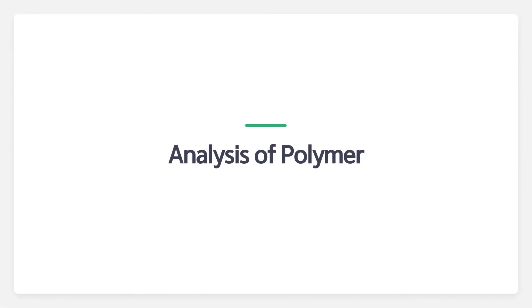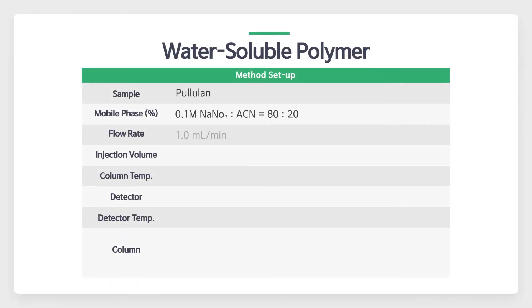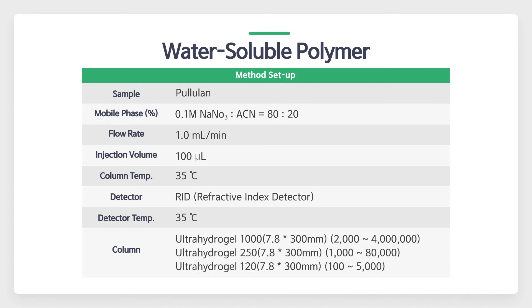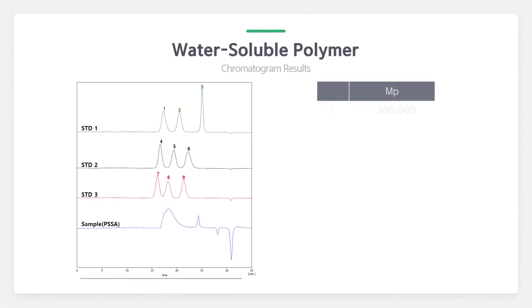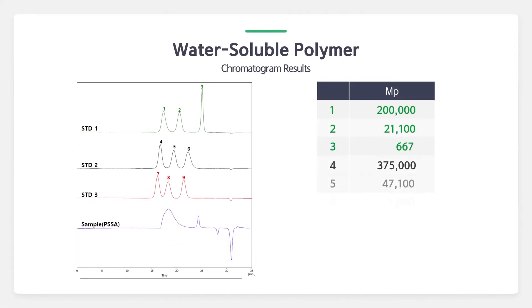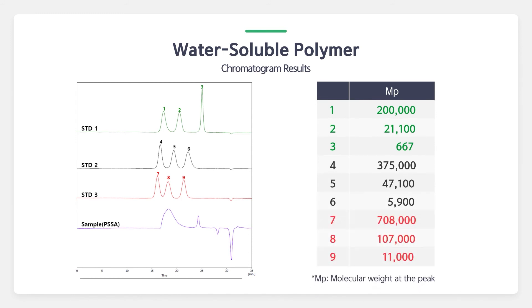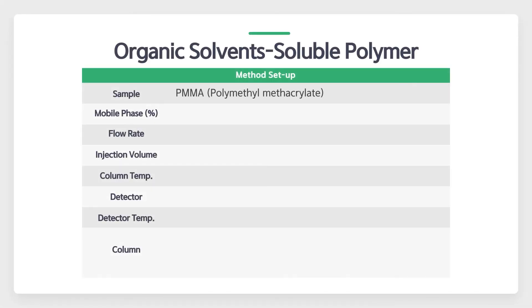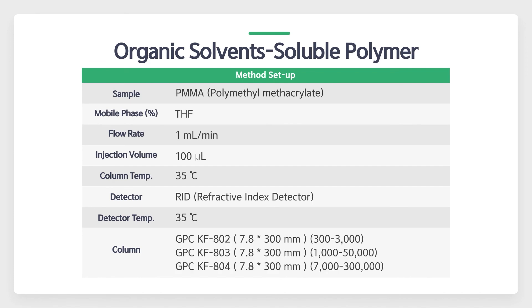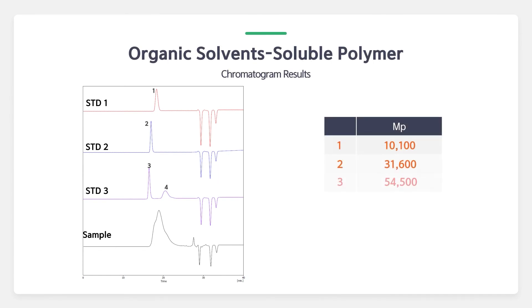Let's see how the analysis results of polymers look. These are the analytical conditions for analysis of water-soluble polymers — multiple columns are used to cover the broad molecular weight range. This is the GPC chromatogram of water-soluble polymer, showing peaks of each analyte in order of molecular weight. These are also the analytical conditions and GPC chromatogram results for organic solvent-soluble polymers.